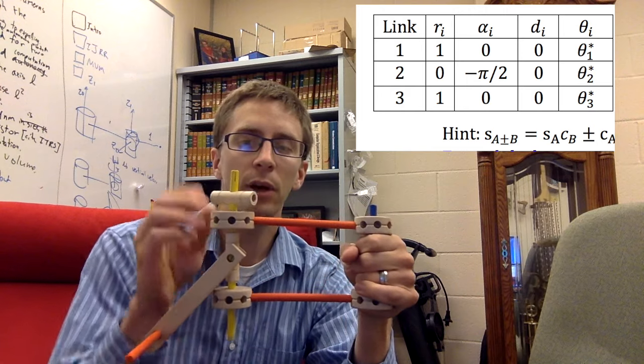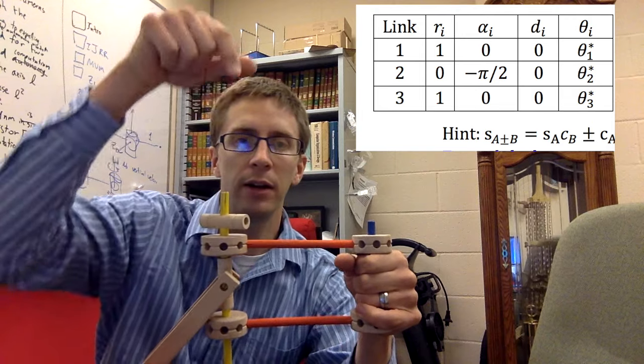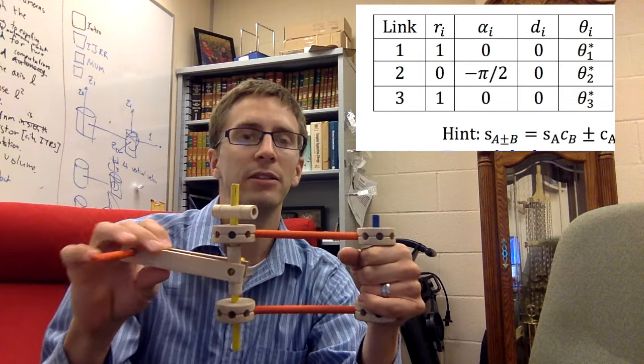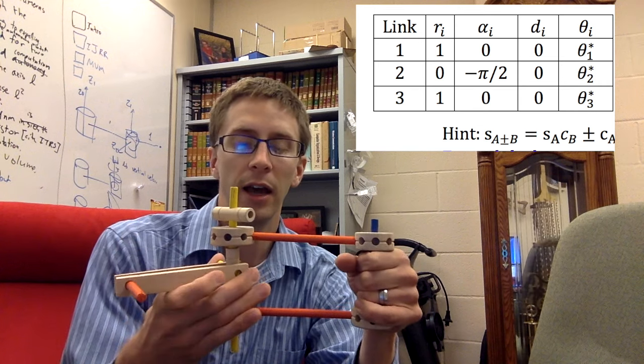And the second joint also had the z-axis in the same axis. So this is this yellow point right here that also revolutes, but it has no offset, neither along the z or along the x.